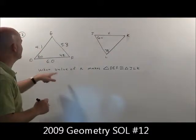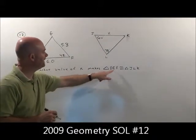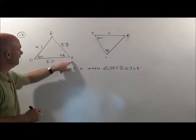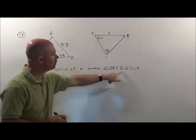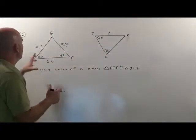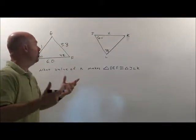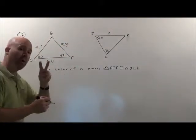Problem 12 asks what value of x right here will make triangle DEF congruent to triangle JLK. So you want to see what's going to make them congruent. What does that measurement have to be? Well, there's two ways to look at this.